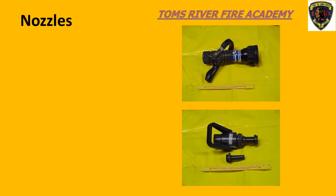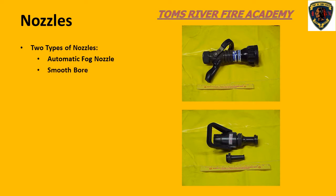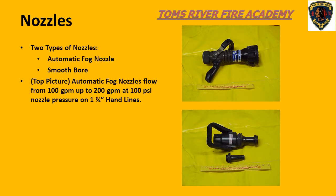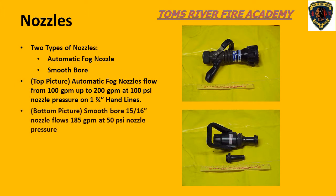Before we discuss friction loss, let us review the nozzles we will use on inch and three-quarter handlines. The two basic types are automatic fog nozzles and smooth bore nozzles. The top picture is a TFT brand automatic nozzle, which can flow anywhere from 100 to 200 gallons a minute on an inch and three-quarter handline. The bottom picture is a 15/16-inch smooth bore nozzle that flows 185 gallons a minute at 50 pounds nozzle pressure.